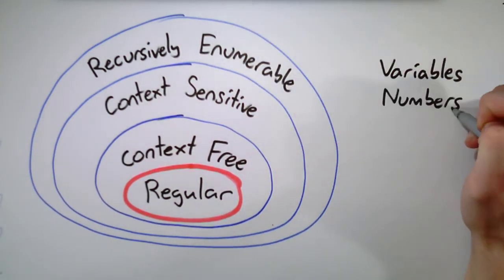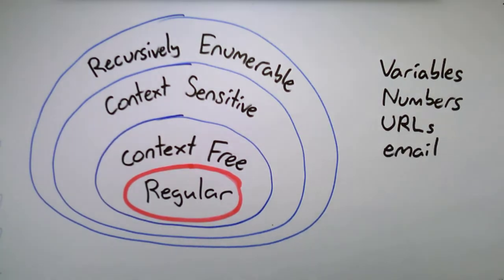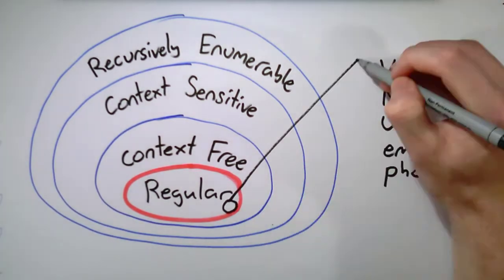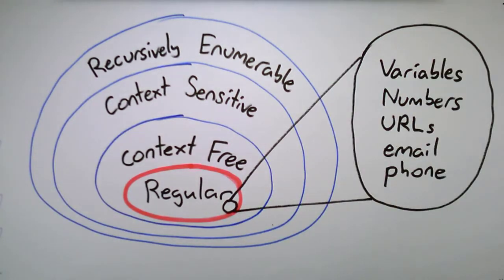Variable names, numbers, URLs, email addresses, and phone numbers can all be described by regular languages.